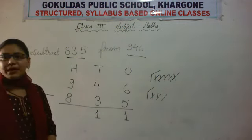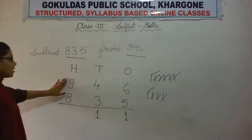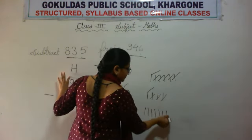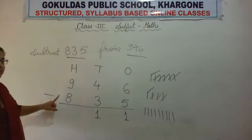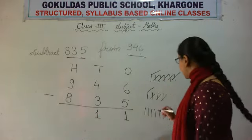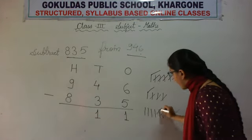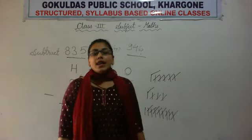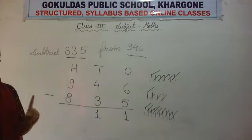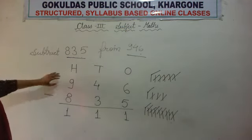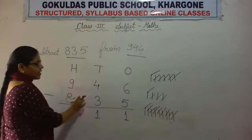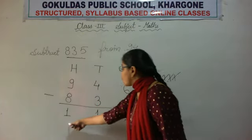Now the hundreds column: the first number is 9, so we draw 9 sticks. Minus 8 — we cancel out 8 sticks. Only 1 stick is left, so we write 1. Our minuend was 946, subtrahend was 835, and our difference is 111.